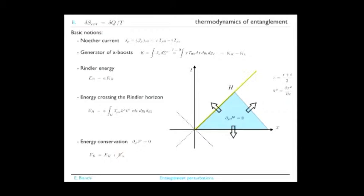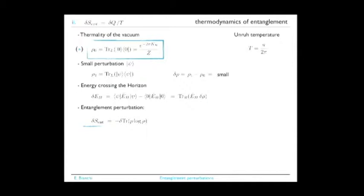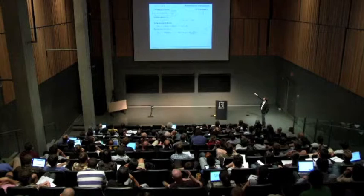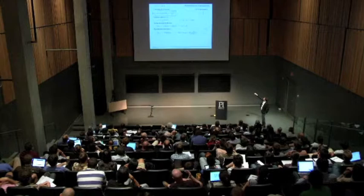All these quantities are expressed in terms of the energy-momentum tensor, understandable at the classical or quantum level. The sum of the three is zero, and under the mild assumption that no energy leaks to infinity, the Rindler energy equals the energy that crosses the horizon. Now I move to the thermodynamic relation. The reduced density matrix for the vacuum is thermal—it's a Gibbs state for the boost Hamiltonian at a universal geometric temperature of 1/(2π). For a small perturbation I compute the reduced density matrix, the energy crossing the horizon, and the variation of the entanglement entropy by differentiating the definition.